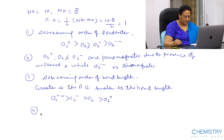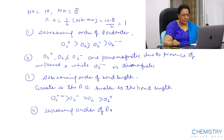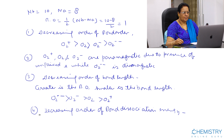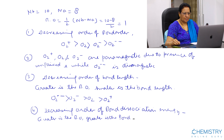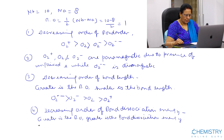The next important point is the decreasing order of bond dissociation energy. Greater bond order means greater bond dissociation energy. So the decreasing order of bond dissociation energy is: O2+ > O2 > O2- > O2(2-).